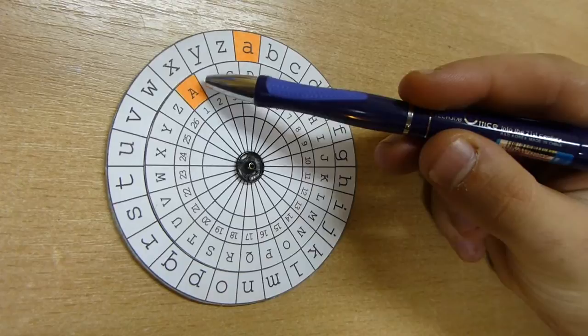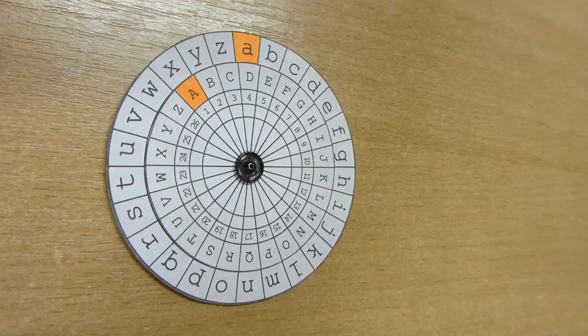V místě, kde abeceda končí, se začíná zase od začátku. Takže místo X se píše A a tak dále.